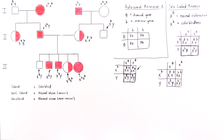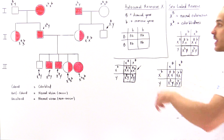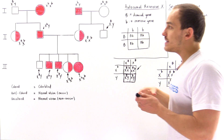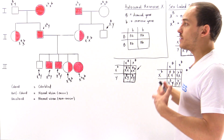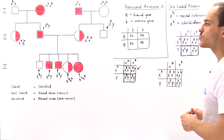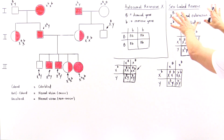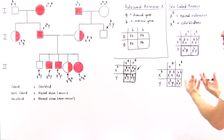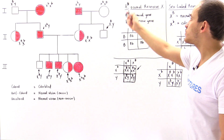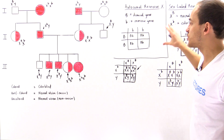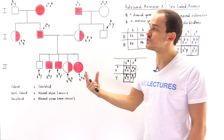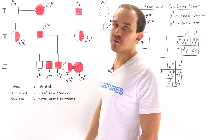By assuming the colorblindness trait is sex-linked recessive, we were able to use the pedigree information and correlate it with the results from these Punnett square experiments. The sex-linked recessive assumption was consistent with all the pedigree data, whereas autosomal recessive was ruled out because its Punnett square results were inconsistent with a portion of the pedigree. This is how you carry out pedigree analysis experiments in genetics.